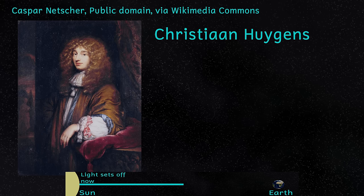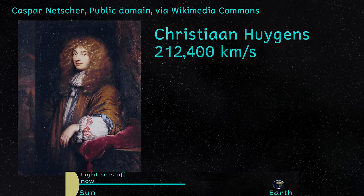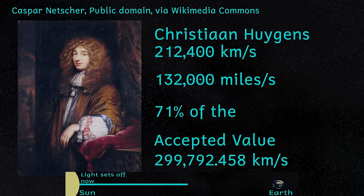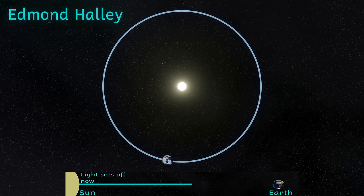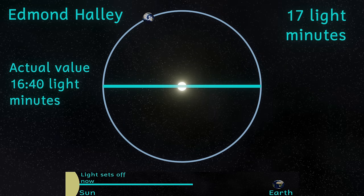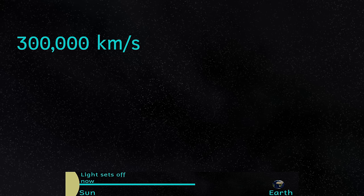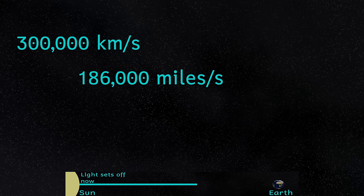He sent a copy of his data to Christiaan Huygens, and it was he who calculated the speed of light to be 212,400 kilometres per second, or about 132,000 miles per second. Huygens seemed less interested in the actual speed of light, but more that light had a finite speed. Edmund Halley would in 1694 calculate that light should take 17 minutes to cross the diameter of the Earth's orbit; using this value, he calculated the speed of light to be 300,000 kilometres per second — 186,000 miles per second — very close to the actual value we have today.